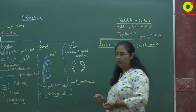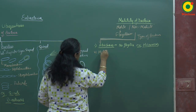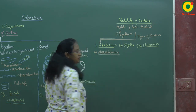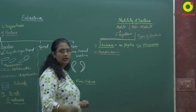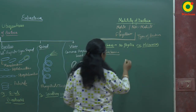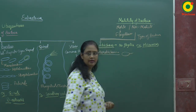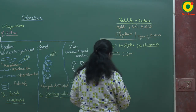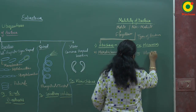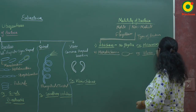The second type is monotrichous bacteria. Mono means single, so there is a single flagellum present on one side of the body. Examples include Vibrio and Thiobacillus.